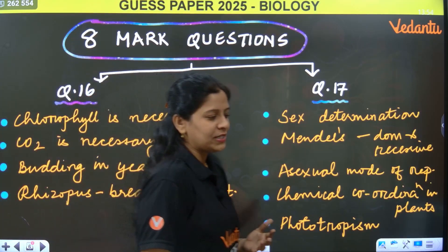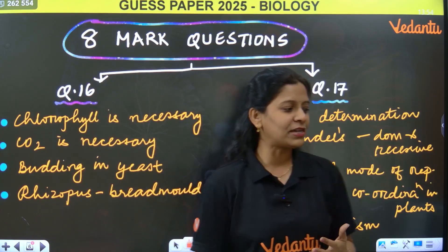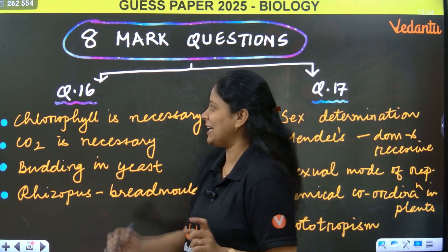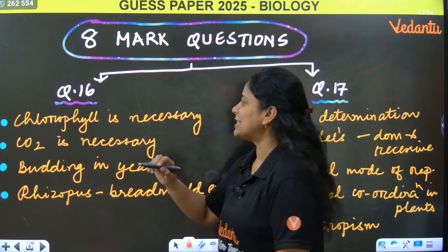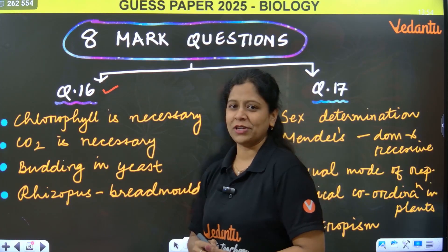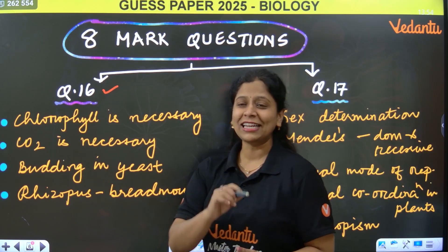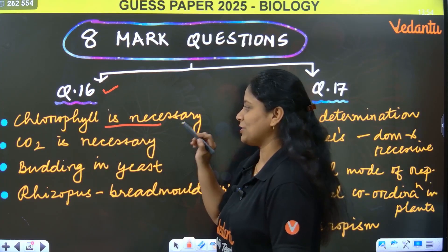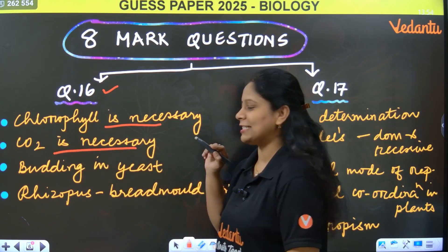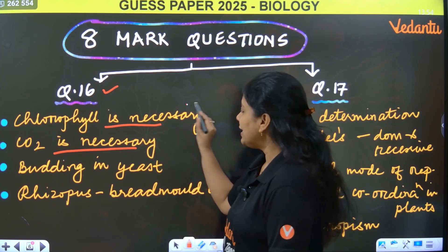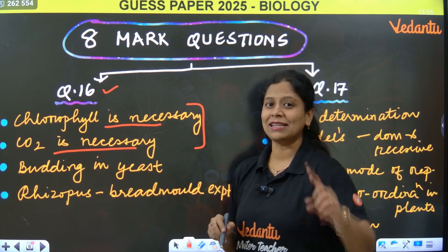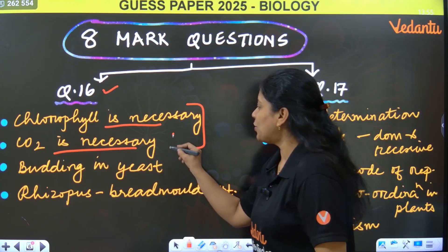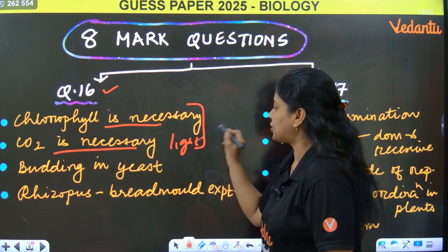Let's start with 8-mark questions. Important questions — first let's have a look at question 16, an 8-mark question. Chlorophyll is necessary for photosynthesis, carbon dioxide is necessary for photosynthesis — these two are very important. Light is necessary for photosynthesis. Now there is an important 8-mark question.